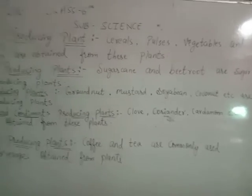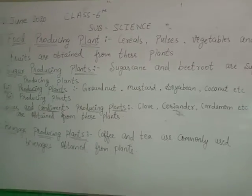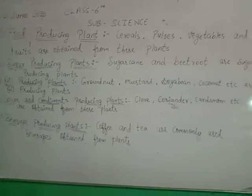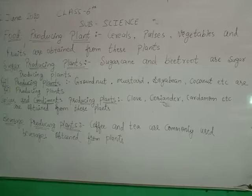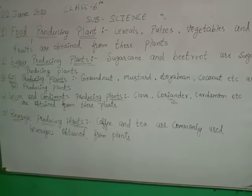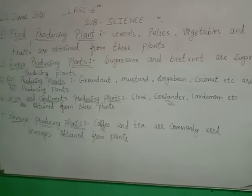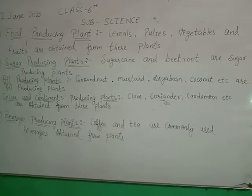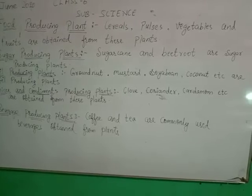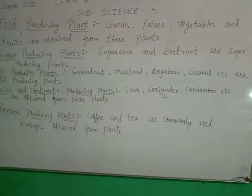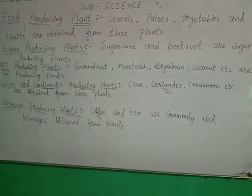Now we have oil producing plants. Oil producing plants are plants from which oil is obtained — plants from which we can extract or take oil. For example, groundnut, mustard, soybean, coconut, etc.